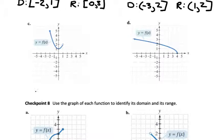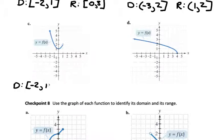For part C, the domain goes from negative 2 to positive 1. Negative 2 is included because it's a solid circle. 1 is not included because it's an open circle. So: square bracket, negative 2, comma, 1, parenthesis. For the range, the smallest value is 1 — that's the lowest point on the graph — and the largest value is 5. Both are included, so they both get square brackets: square bracket, 1, comma, 5, square bracket.